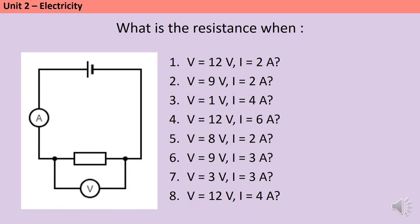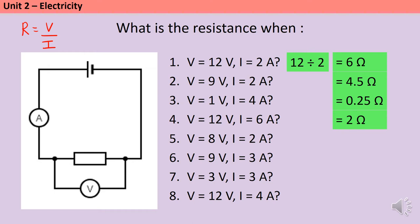Here are eight questions for you to have a go at. Remember, resistance is potential difference divided by current. Pause the video and then when you're ready we'll go through the answers. For question one you should have done 12 divided by 2 to get 6 ohms. For question two you should get 4.5 ohms, then 0.25, 2, 4, 3, 1 and finally 3 ohms.